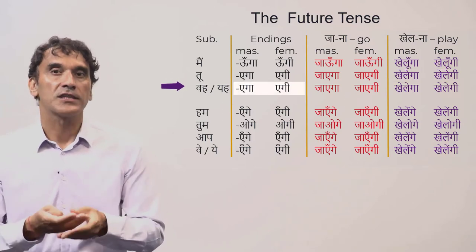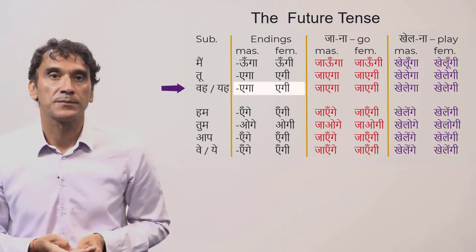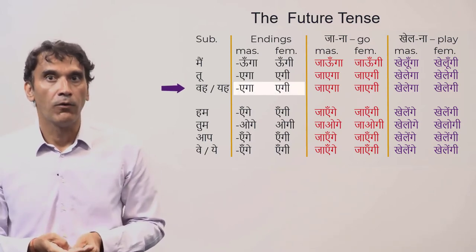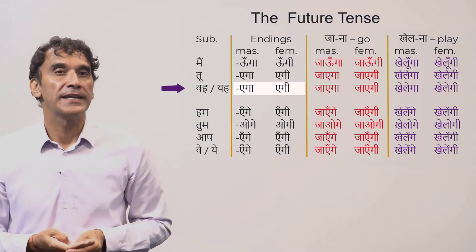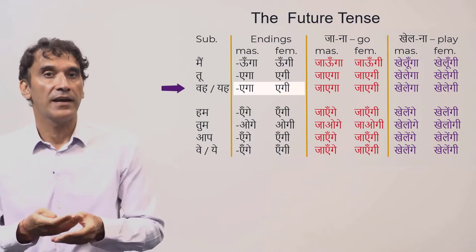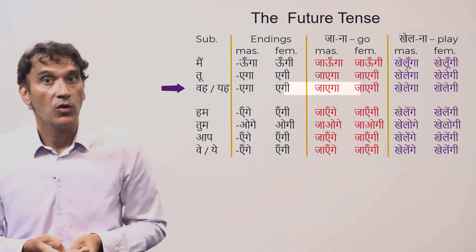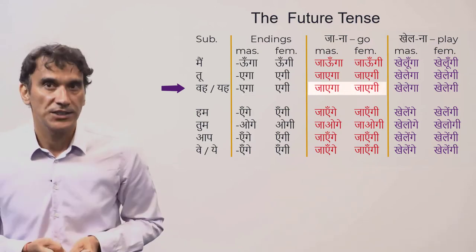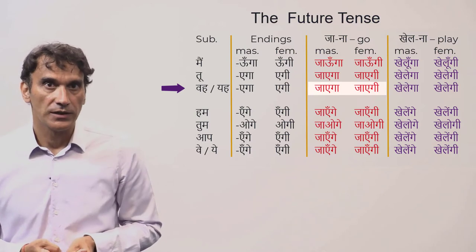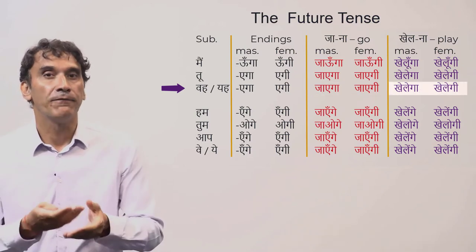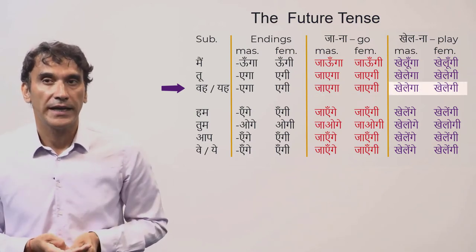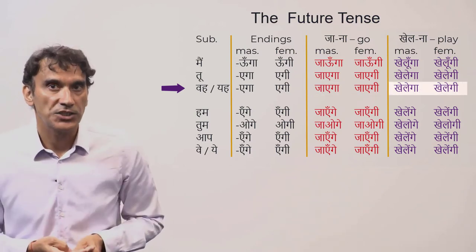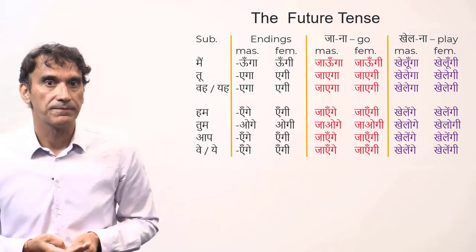For the third person singular subjects — he, she, and it — 'wo' and 'ye' — the endings are 'ega' and 'egi.' So 'wo jaega' means 'he will go' and 'wo jaegi' means 'she will go.' Similarly, 'wo khelega' means 'he will play' and 'wo khelegi' means 'she will play.'